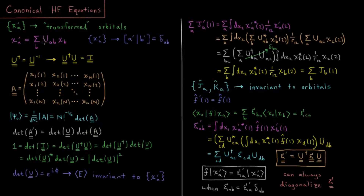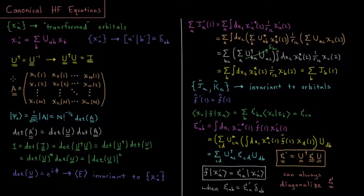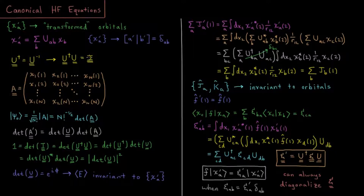What do we know about the transformation matrix? We're going to show that the type of matrix needed here is what we call unitary. A unitary matrix is defined as a matrix whose Hermitian adjoint is equal to its inverse. The Hermitian adjoint of a matrix is obtained by taking the transpose — so U_AB becomes U_BA — and then taking the complex conjugate of all elements. The inverse is the matrix you multiply a matrix by to get the identity matrix, which has ones down the diagonal and zeros everywhere else.